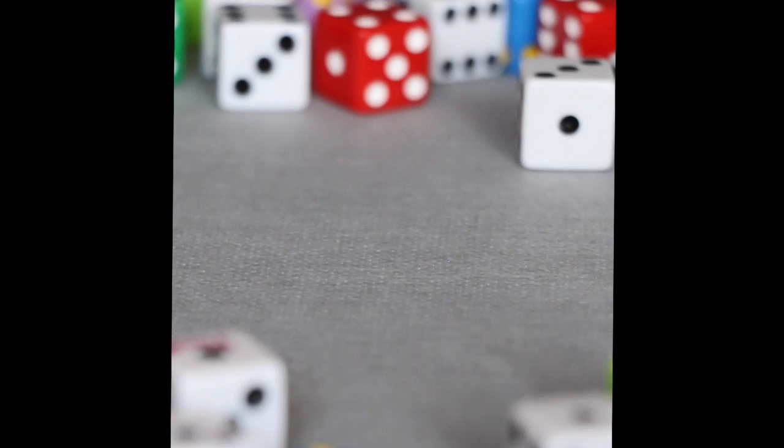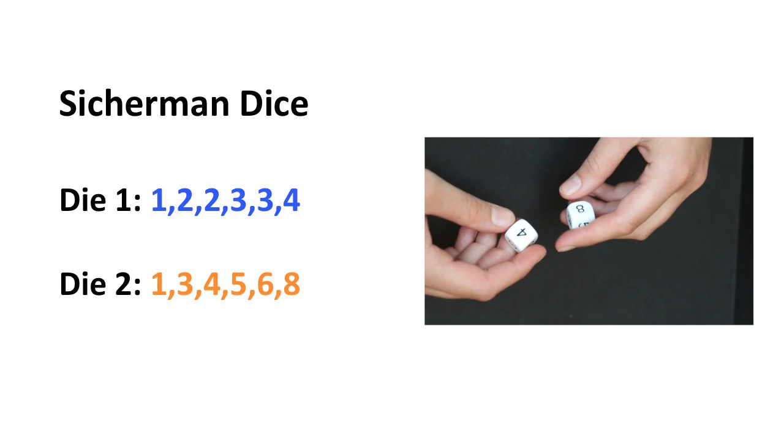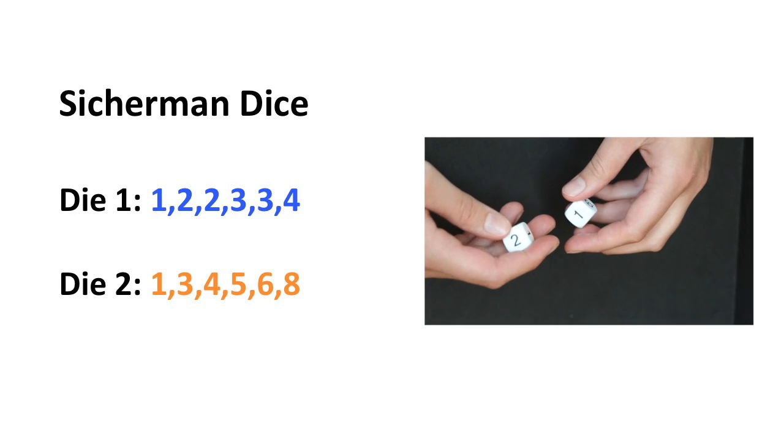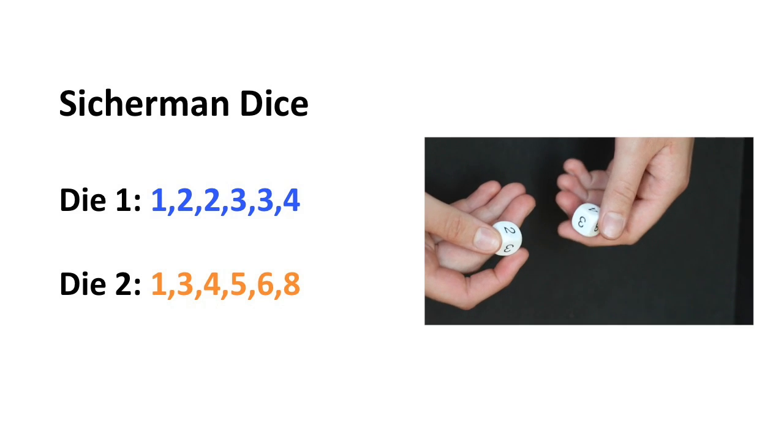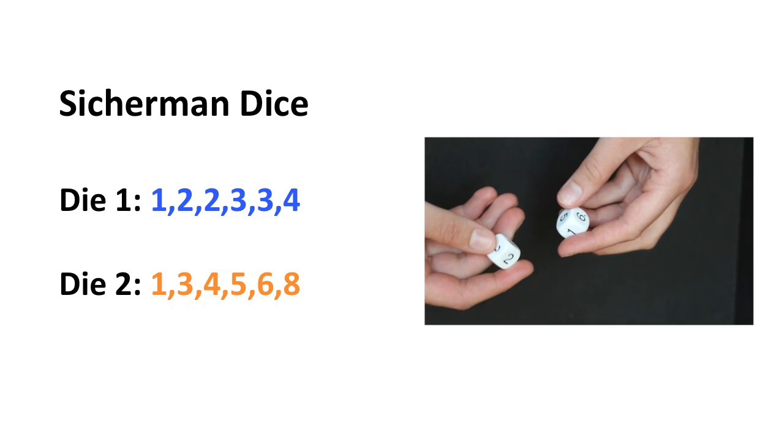In the 1970s, George Zekerman found this new labeling with 1, 2, 2, 3, 3, 4 on one die, and 1, 3, 4, 5, 6, 8 on the other die.